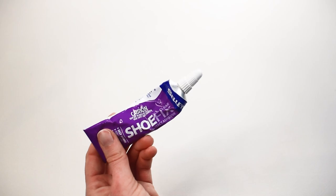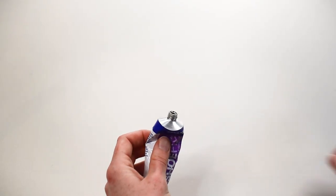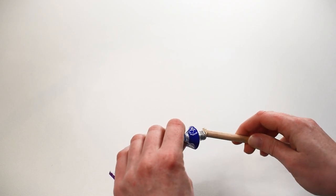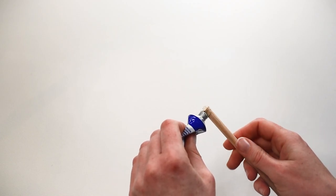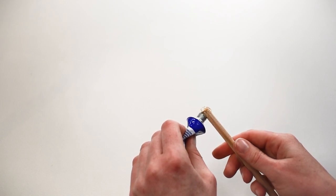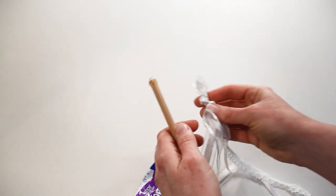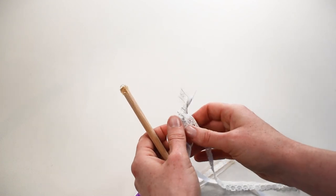Grab your glue of choice and dab a glob of glue on the top of your dowel and around the top. You don't need too much. Separate your ribbon pieces and place the knot neatly on top of the dowel.